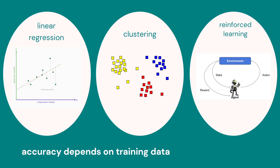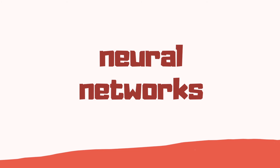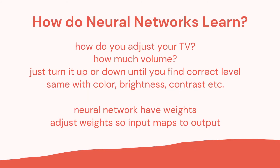Machine learning such as supervised and unsupervised depends on the accuracy of the training data. Neural networks work similarly to how you adjust your TV — you don't use a specific setting, you just turn the volume up or down until you find the correct level, and you might do the same with color, brightness, and contrast. Neural networks have weights, and they adjust those weights up and down until the input maps correctly to the output.